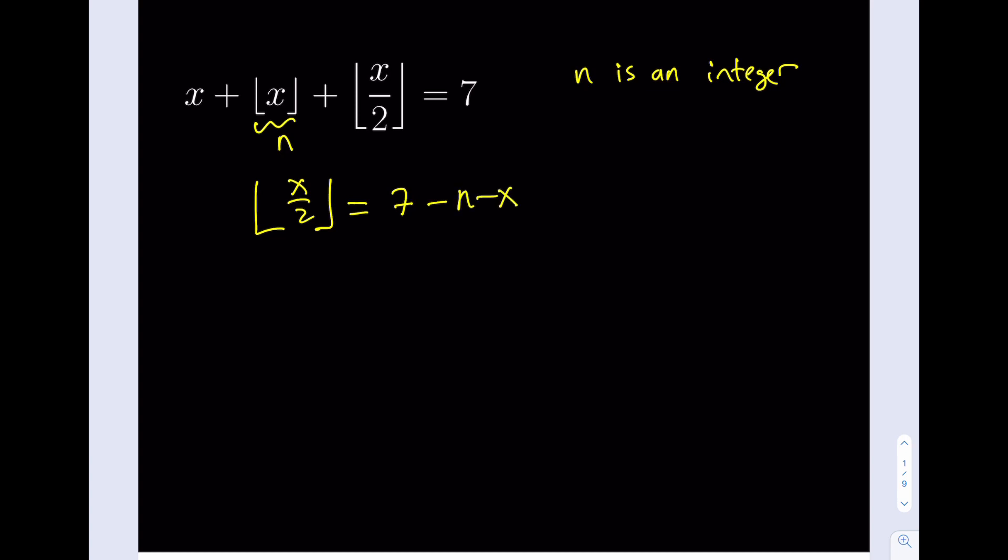Now, we have a conclusion here. Since we assume that the floor value of x is equal to n, this means that x is between n and n plus 1. Yeah, half closed interval, right? Because n is an integer and x needs to be in that interval.